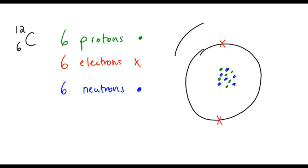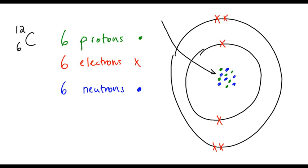And we have a second shell, which has 4 electrons in it. So the protons and neutrons are contained within the centre. This is where the mass is. This is called the nucleus.